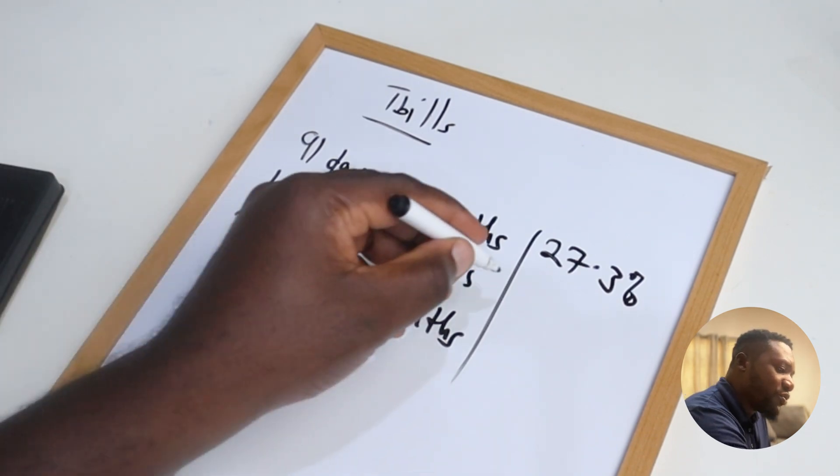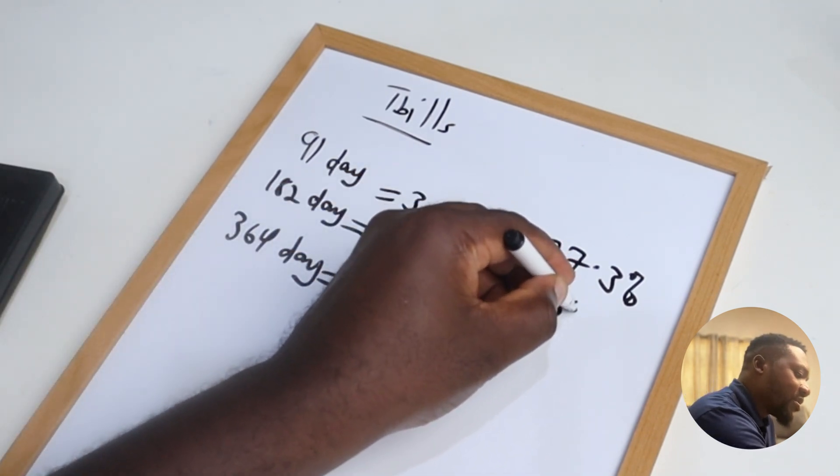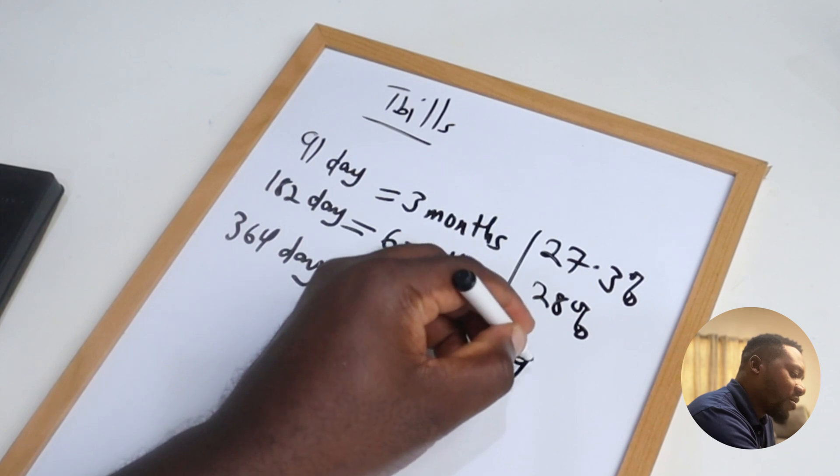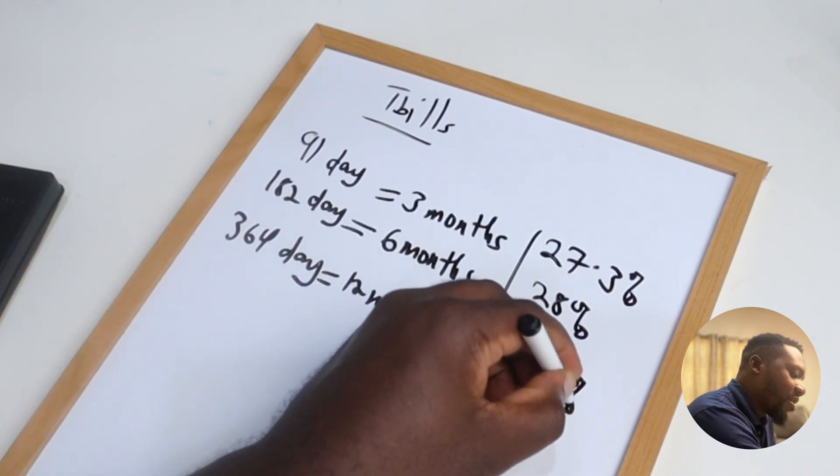The 182 day bill is giving you 28 percent, and then a 364 day bill is giving you 29.8 percent.